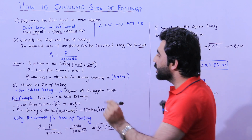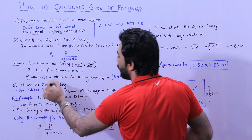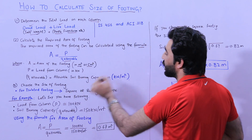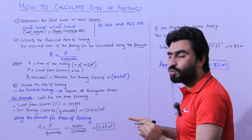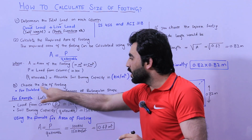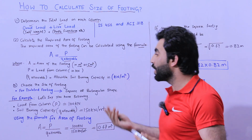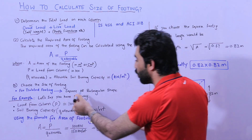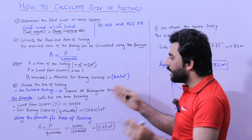Q allowable is the allowable soil bearing capacity, which is in kilonewtons per meter square. Now we will find and choose the size of the footing — for example, we are finding this for isolated footing, either square or rectangular shape.